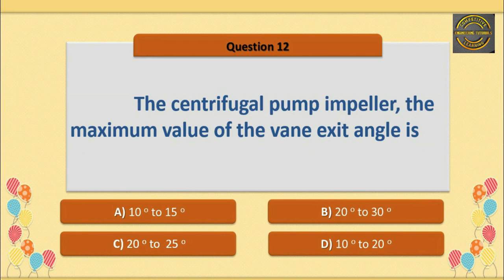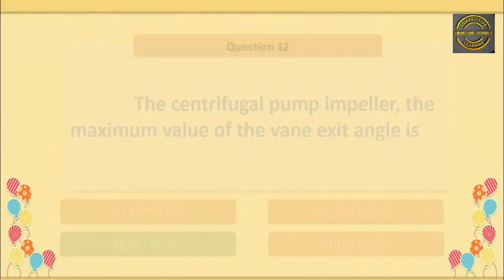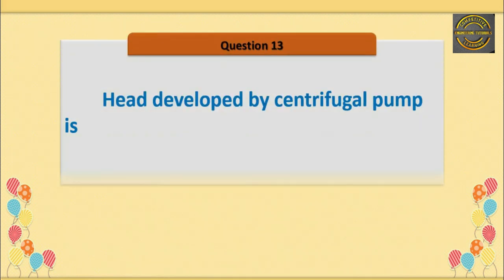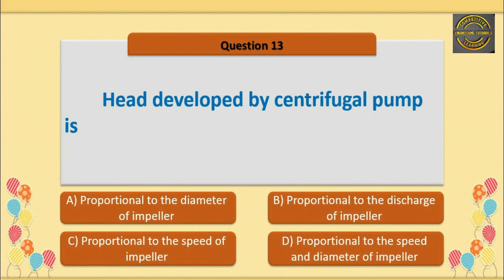Q12. For the centrifugal pump impeller, the maximum value of the vane exit angle is — option C is correct — 20 degrees to 25 degrees. Q13. Head developed by a centrifugal pump is — option D is correct — proportional to the speed and diameter of the impeller.